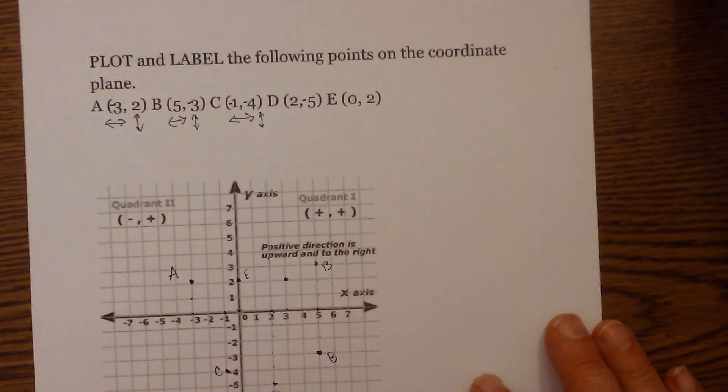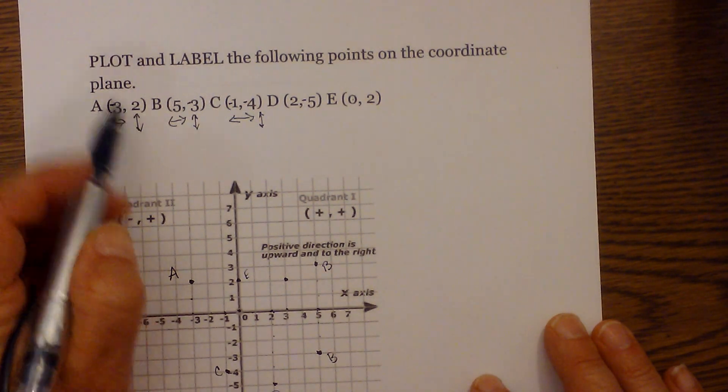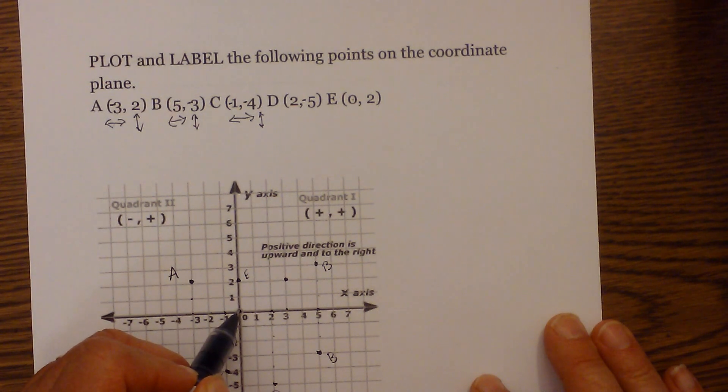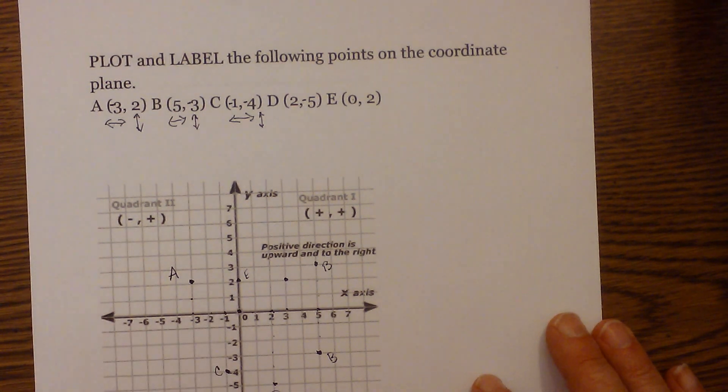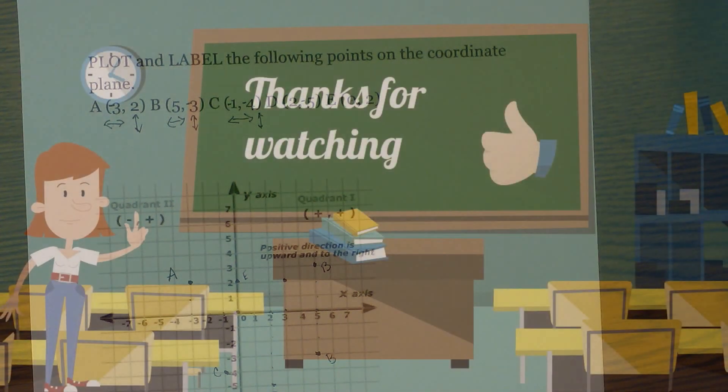So in recap, remember when you plot numbers, x which is horizontal is first, y which is vertical is second. Always start at the origin which is zero, zero, and plot away. Thanks for watching, and Moo Moo Math uploads a new math and science video every day. Please subscribe and share.